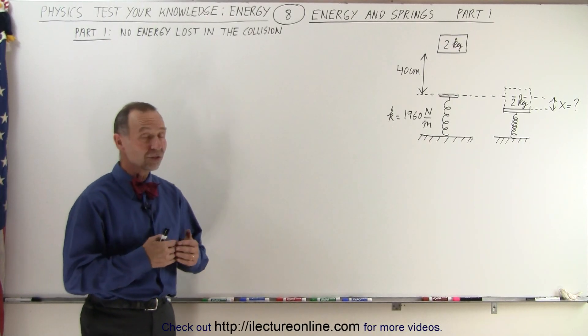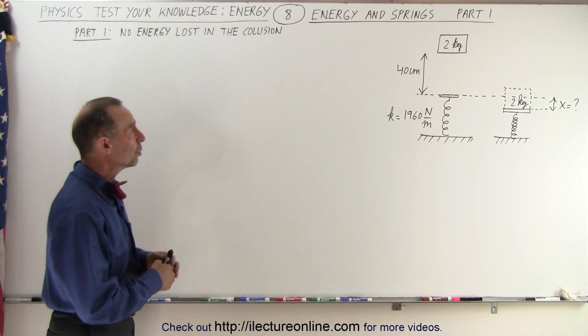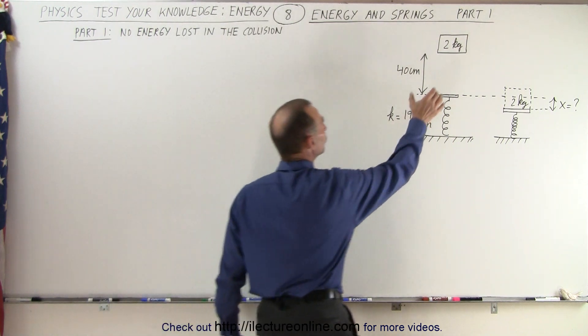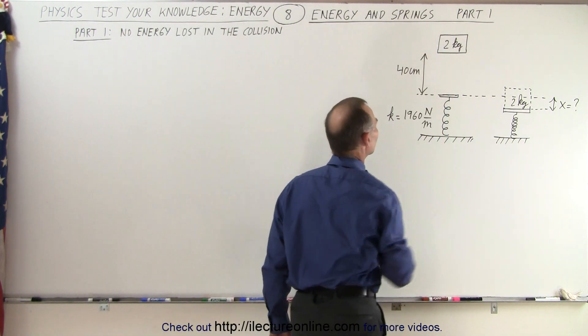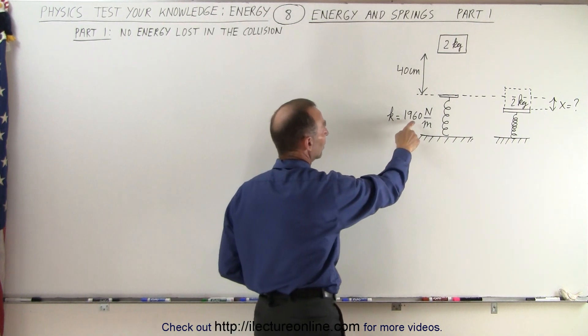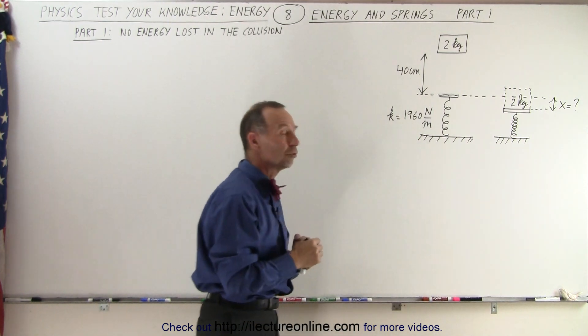Welcome to our lecture online. Our next challenging problem has to do with an object with mass of 2 kg held at a height of 40 cm above a spring with a spring constant of 1,960 N per meter.